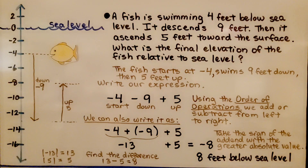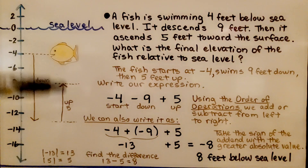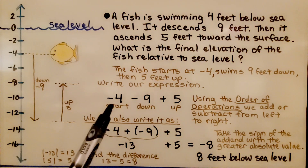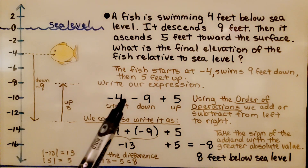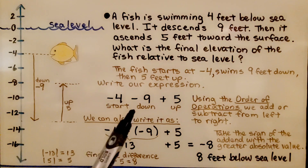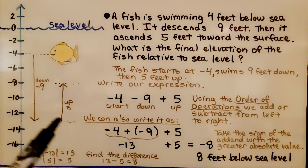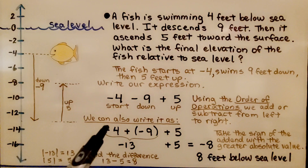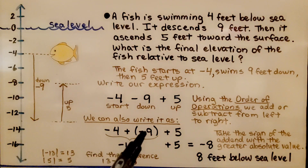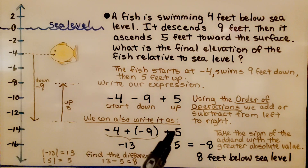Descend means go down, and ascend means go up. What's the final elevation of the fish relative to sea level? That means where is the fish according to sea level when this is all done? When the fish starts at negative 4, it swims 9 feet down, so we can say minus 9, and then 5 feet up, so we can add a 5. We can also write it as negative 4 plus negative 9 for going down, plus a 5 for going back up.